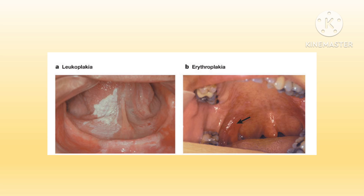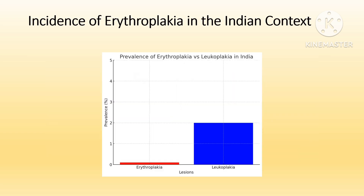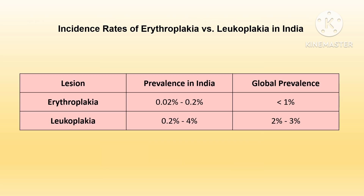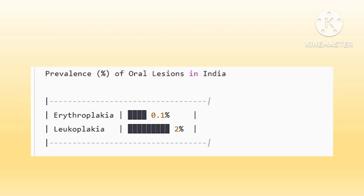The key distinction of erythroplakia from leukoplakia is its red appearance instead of white. Regarding the incidence in the Indian context, it is a relatively rare oral lesion but carries a significant burden due to its high malignant potential. It accounts for less than 1% of oral precancerous lesions globally. In India, its prevalence is estimated to range from 0.02% to 0.2% in population-based studies. Erythroplakia is much rarer than leukoplakia, which has a prevalence of 0.2% to 4% in India.